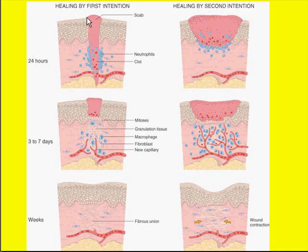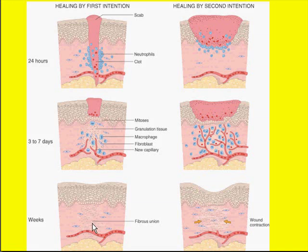When you heal by first intention, think of a tissue that has been very cleanly cut with a scalpel, like in surgery. Because there's very little disruption of the connective tissue, you can basically put the two ends back together, and when it heals, it winds up being pretty much exactly like it was before with minimal scarring.